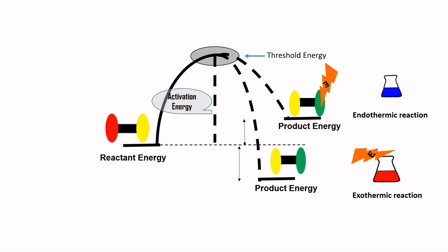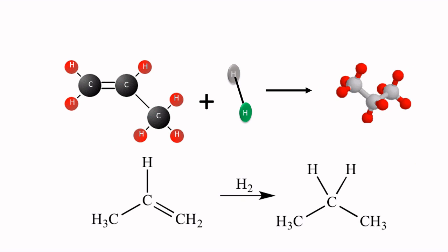And if the product energy is higher than the reactant energy, then the reaction will be known as an endothermic reaction, because heat is taken by the system from the surroundings. Now let's try to find out the enthalpy of the system, taking the example of a propylene molecule reacting with hydrogen molecules.